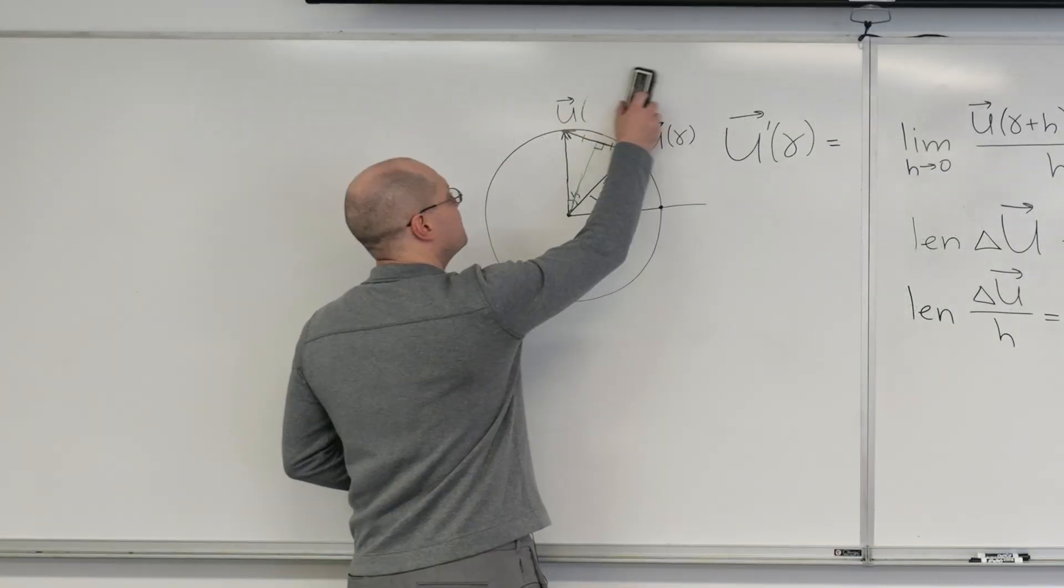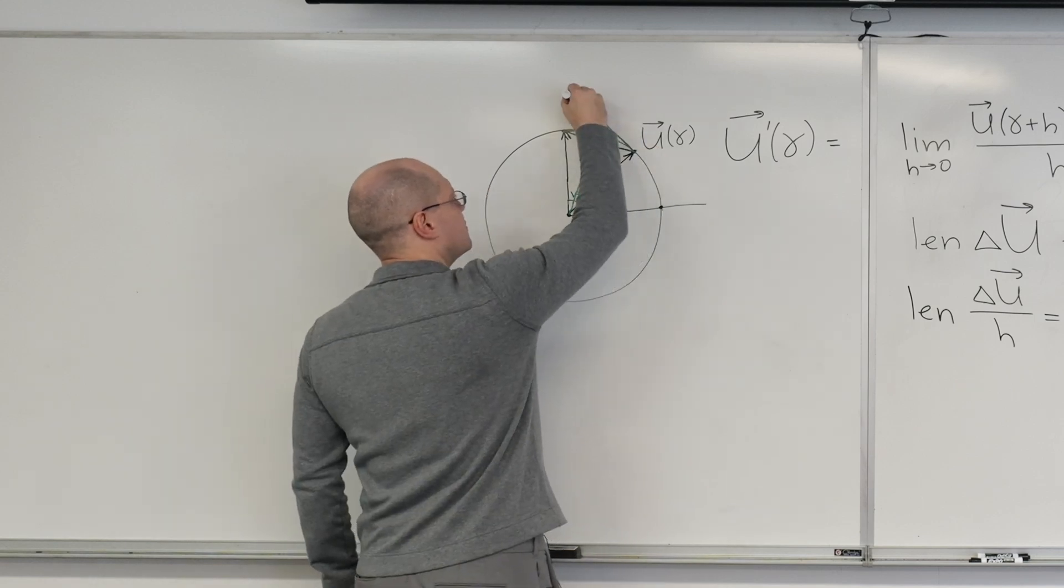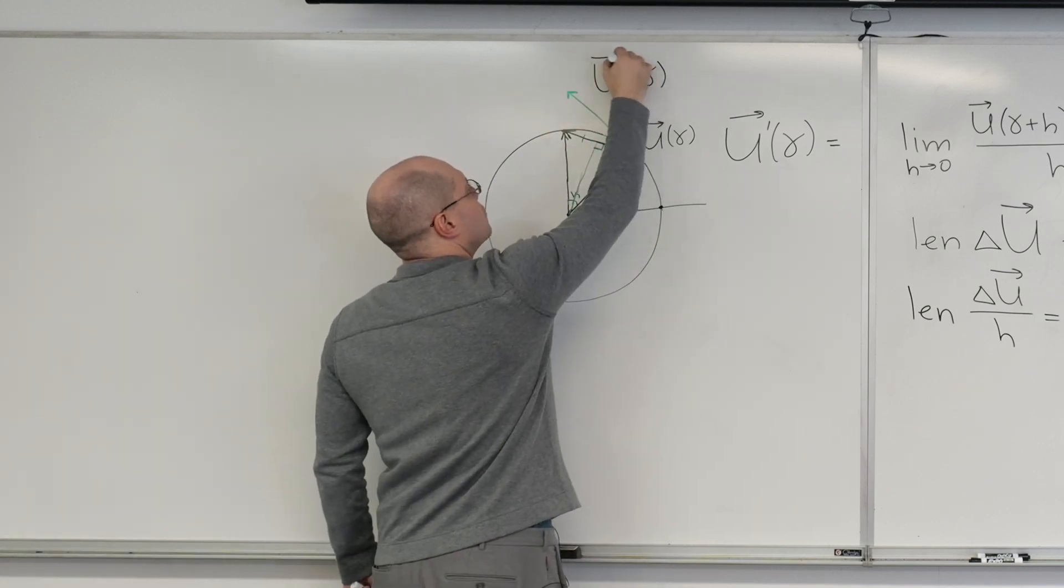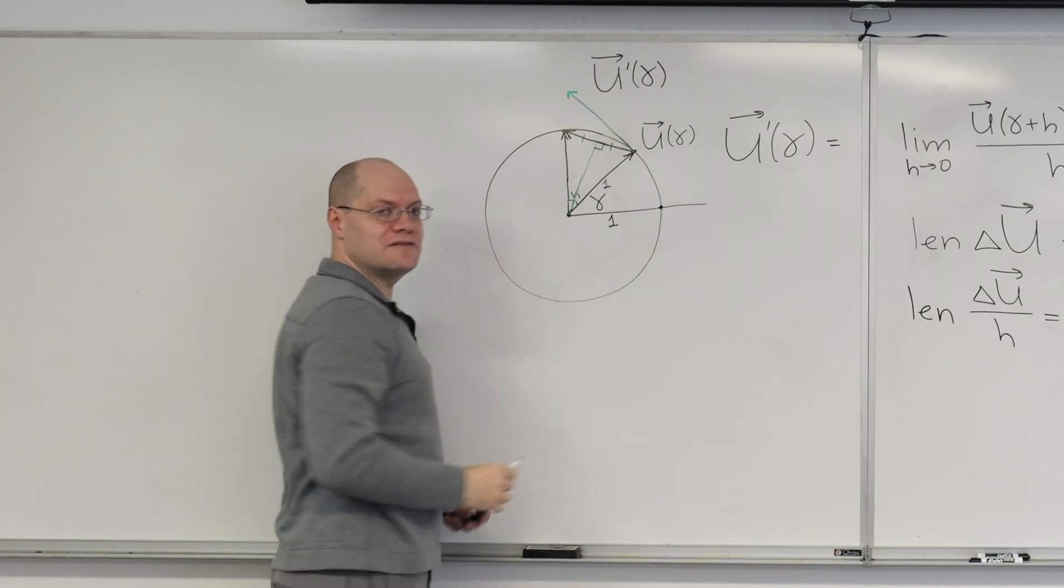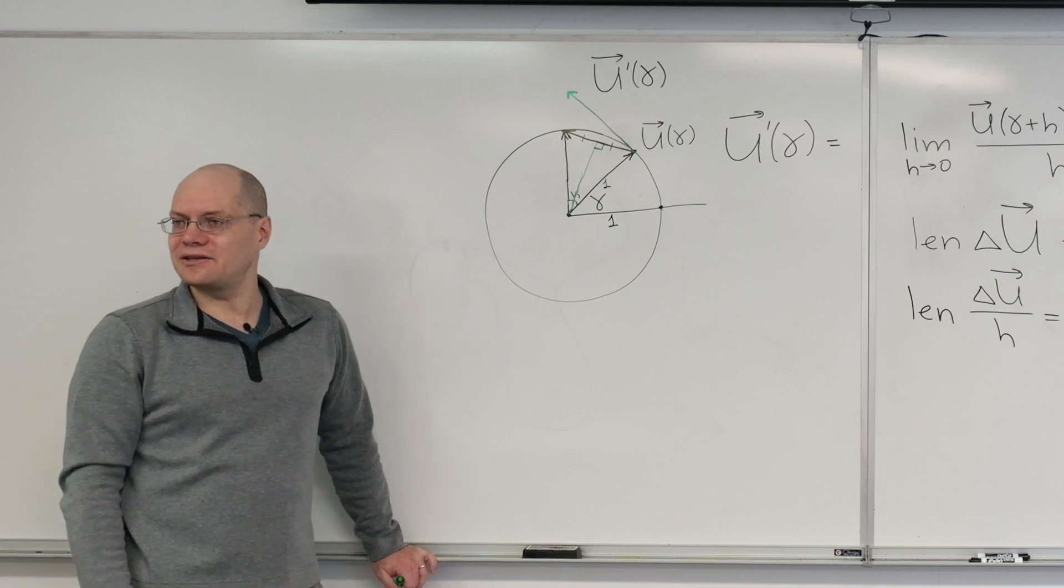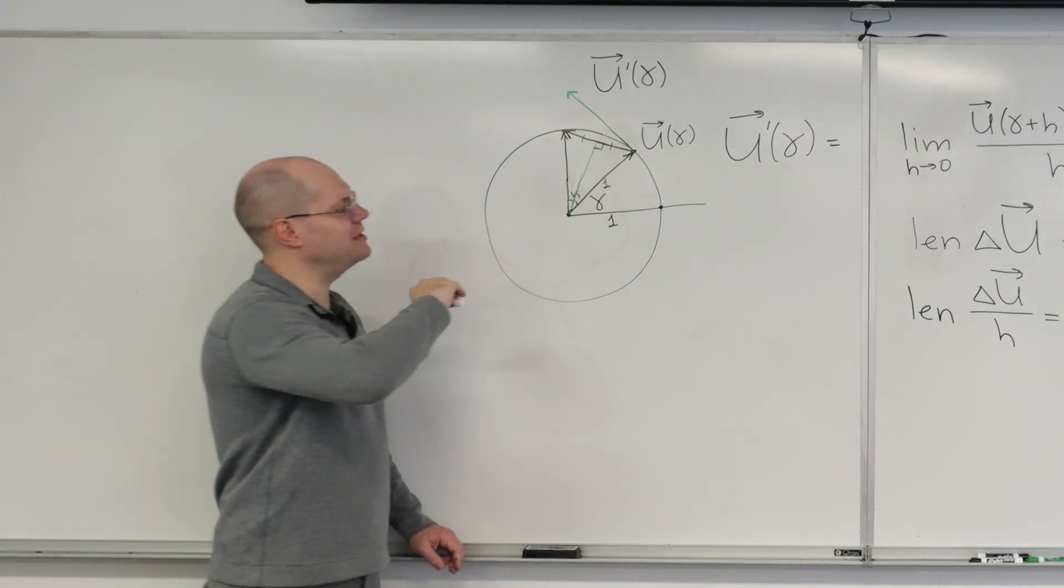So in the limit, this vector will be unit length. So let me draw it. U prime of gamma. So we knew its direction from our previous discussion. And now we were able to calculate its length. And its length is one.